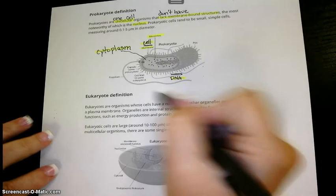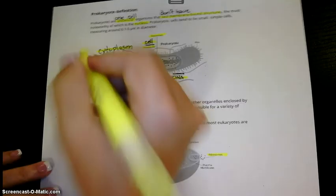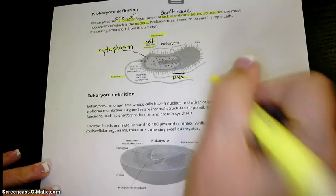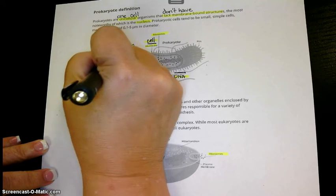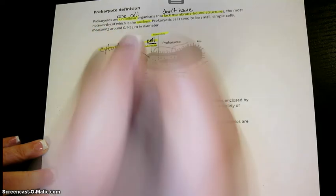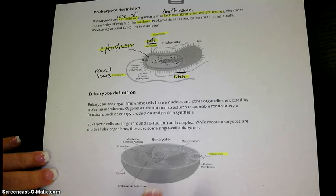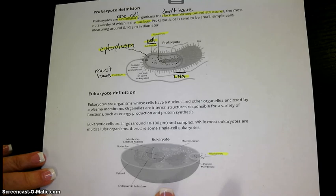This particular diagram is a bacteria. It shows a flagellum, which is like a tail-like structure that helps it to move. Most of your bacteria have a flagella, but not all. This picture doesn't show a flagella, but some cells, protists, for example, do have flagella. So some eukaryotic cells have a flagella, but not all.